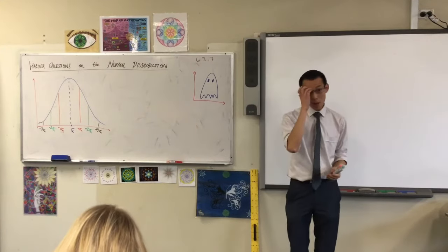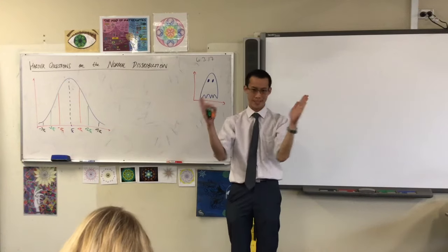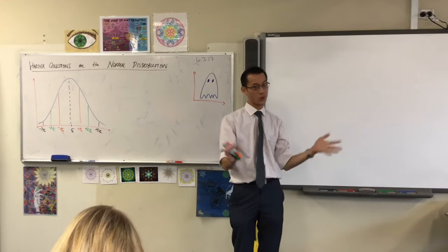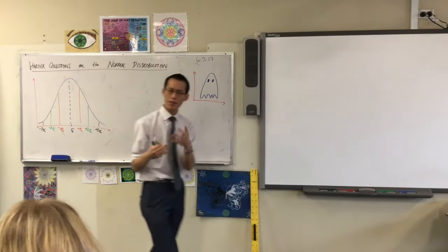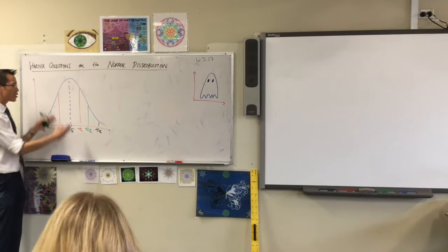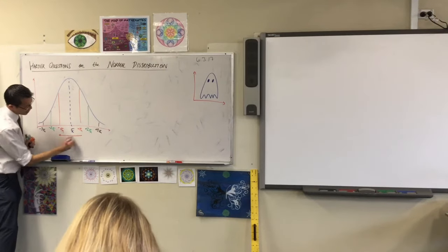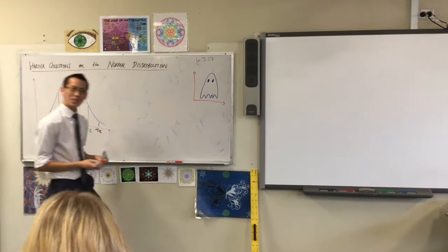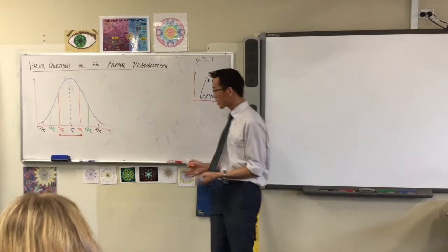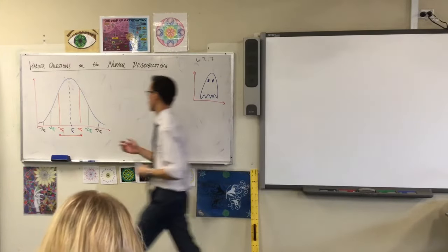Now I want you to recall, we said if you are within this certain range, say one, two, or three standard deviations, we've got all of these numbers for working out how much of the population is within certain boundaries. So for instance, in here, within one standard deviation of the mean, just by the shape of the graph you can see you've got a huge proportion of people in there.